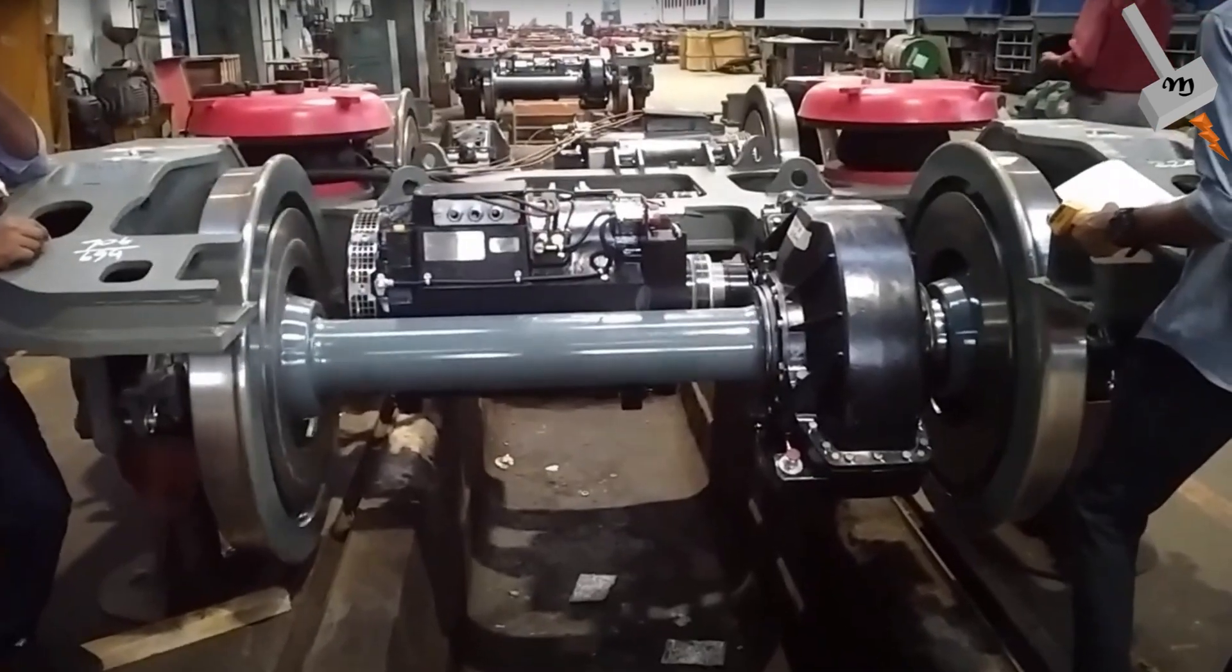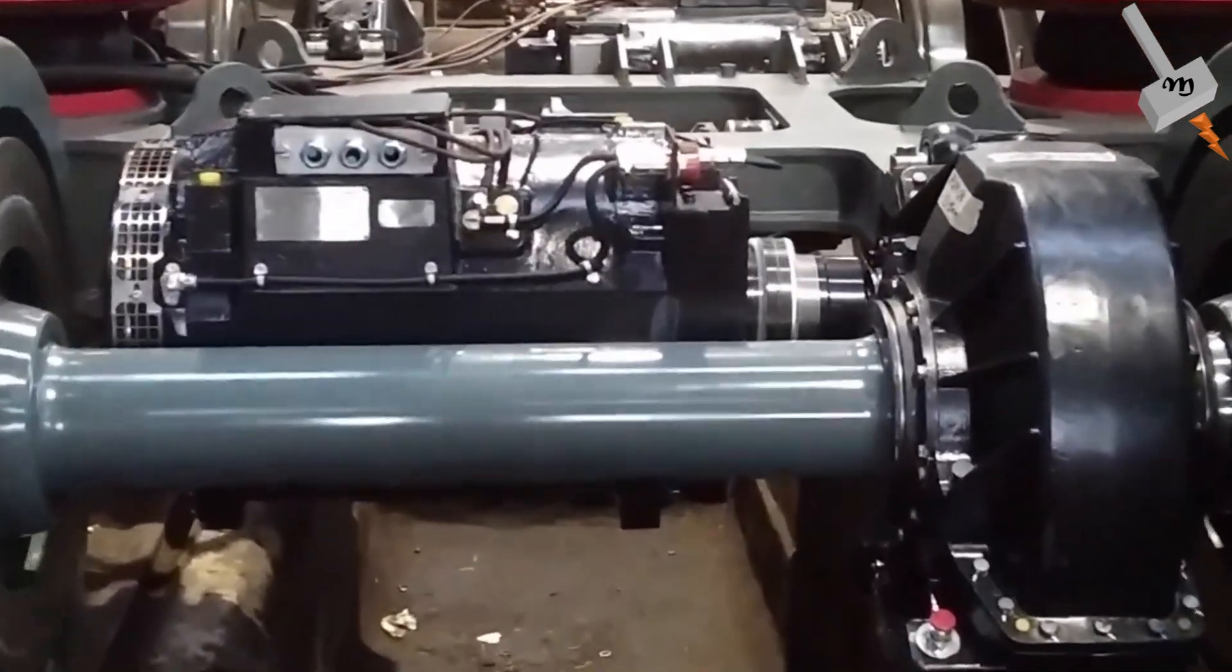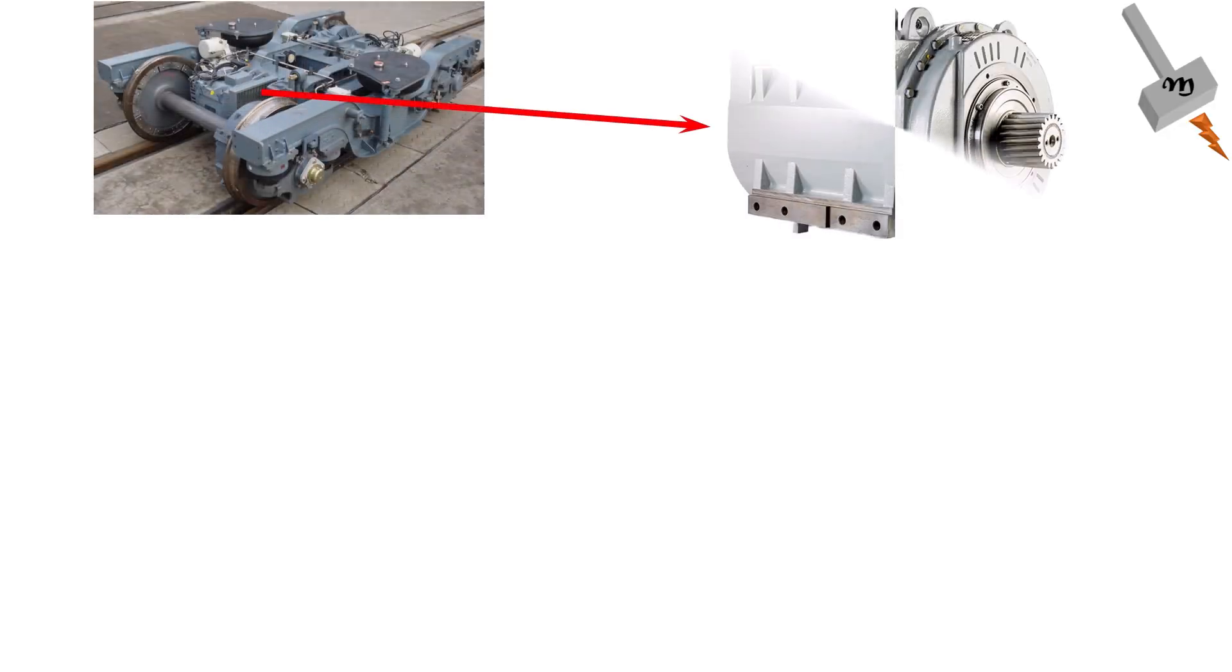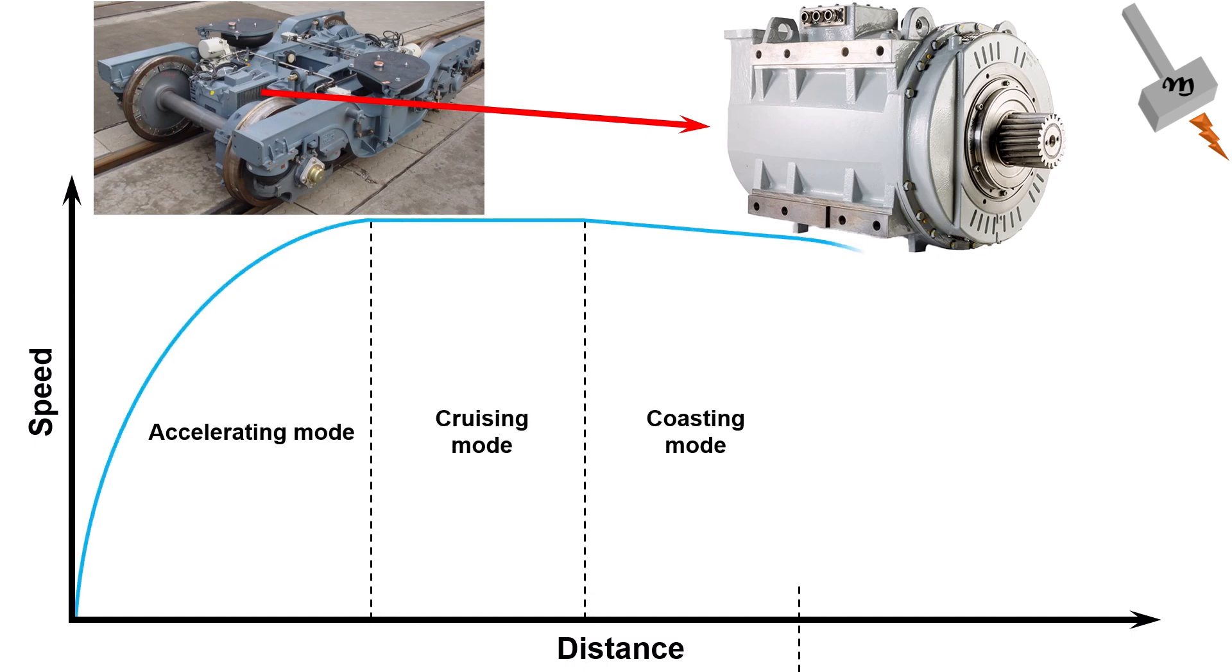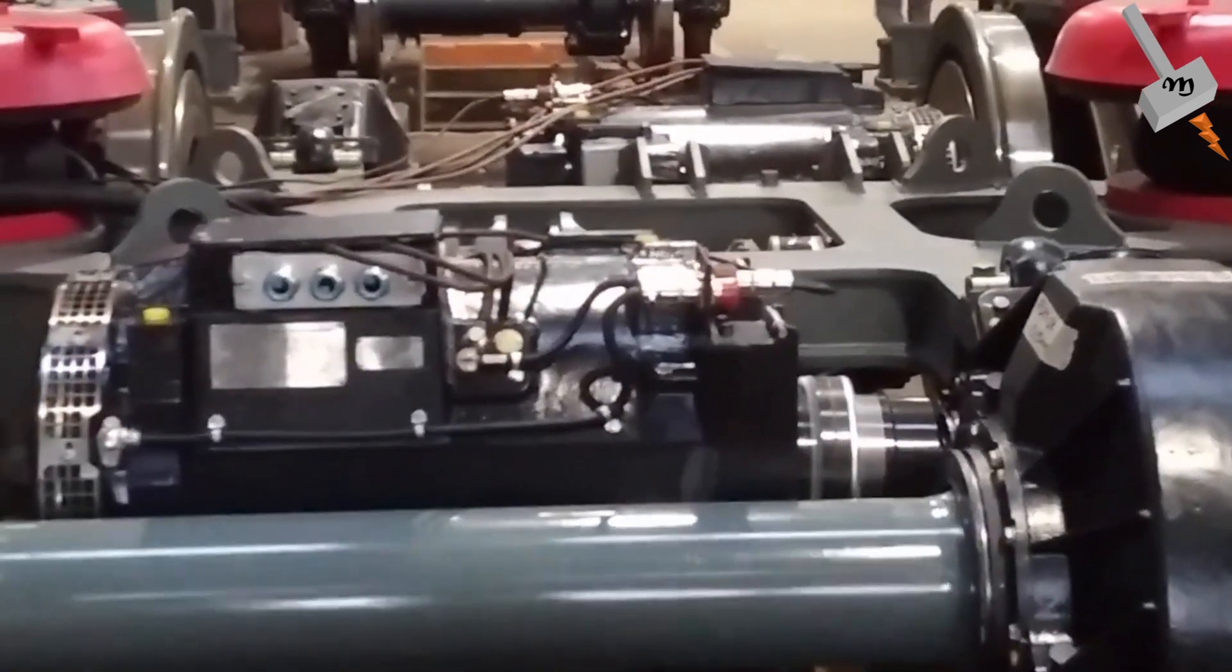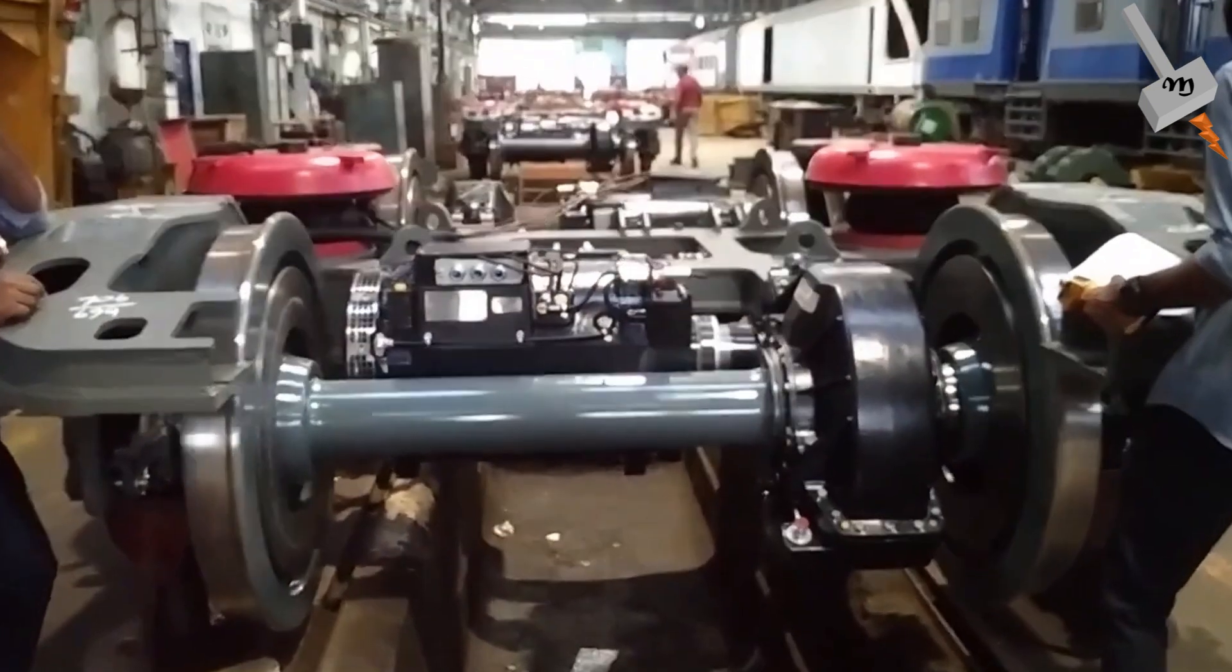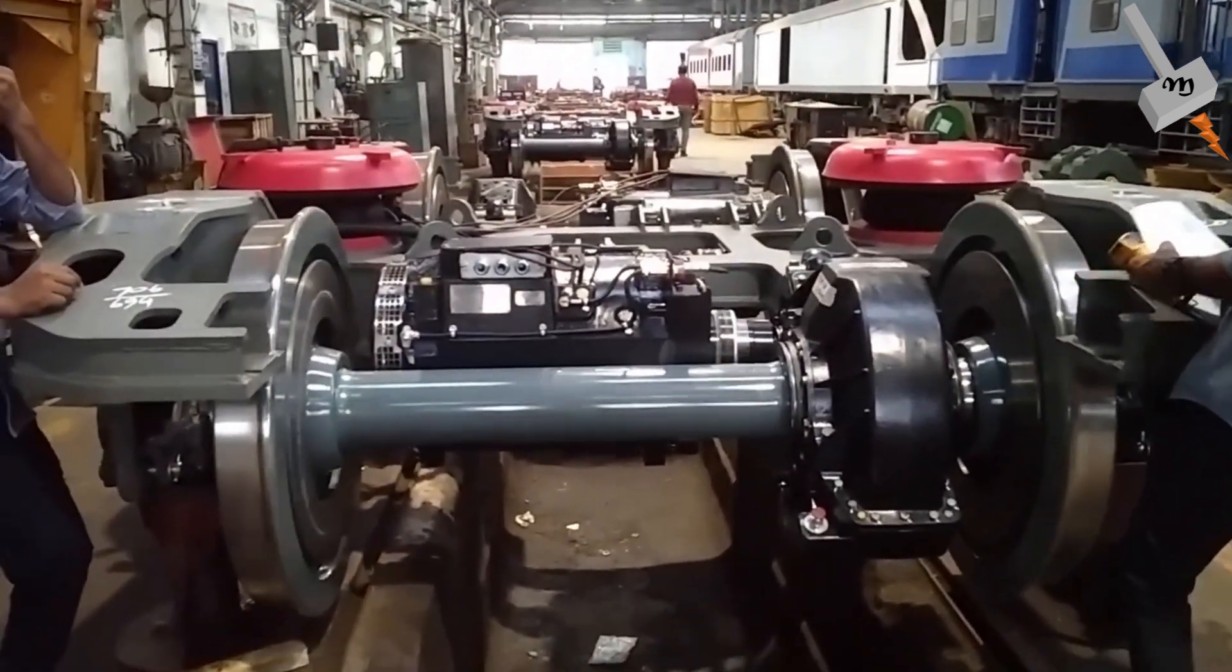Before we get more into the traction converter topic, let's refresh our knowledge on traction induction motors. A traction induction motor has four fundamental operating modes – acceleration, cruising, coasting, and braking. Energy-optimal trajectories are determined by optimizing the sequence of the operating modes as well as the corresponding switching points. According to these operating modes, the traction converter needs to adjust the supply so that the torque and speed requirements of the locomotive are met.